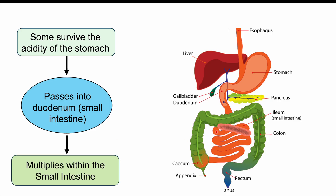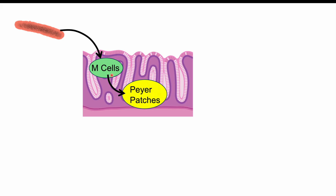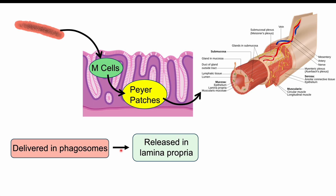Once in the small intestine, Salmonella uses what we call fimbriae or pili — little projections off its cell body — to attach to small intestinal cells. It then interacts with M cells to enter into the intestinal mucosa, penetrating into what we call Peyer's patches, which are part of our immune system inside the intestine. The bacteria gets taken up by these cells and is kept in vesicles called phagosomes. The bacteria can then survive and get released into the lamina propria.